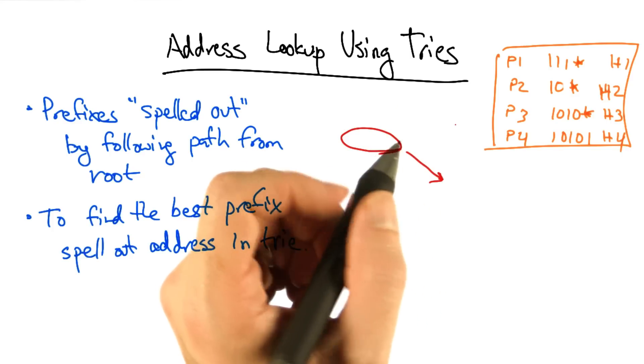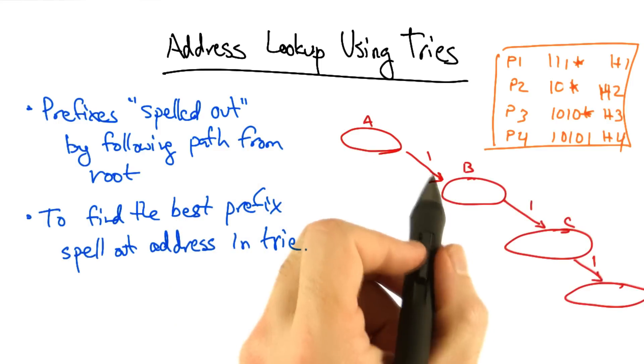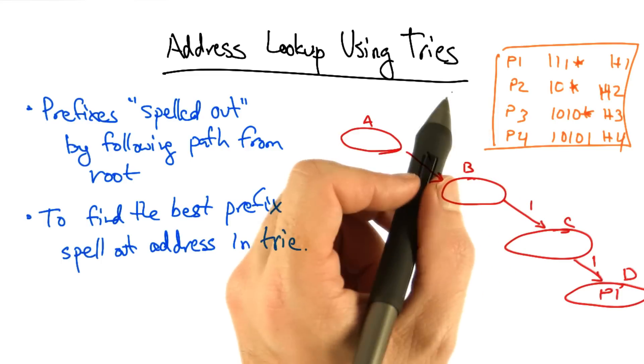So to insert 1 1 1 star, we basically start here. 1 1 1, and then we insert P1, and then we repeat this process.